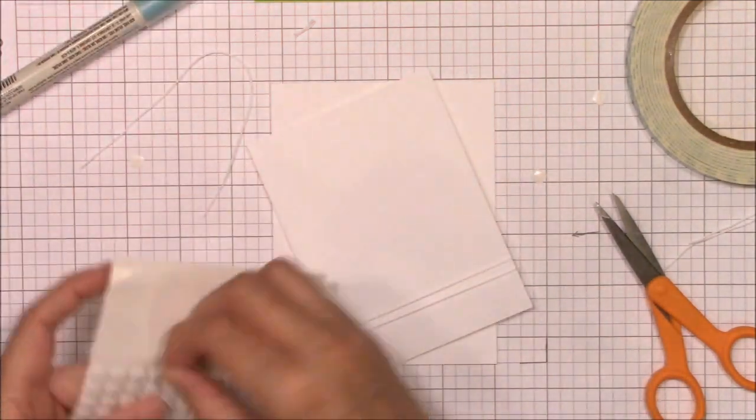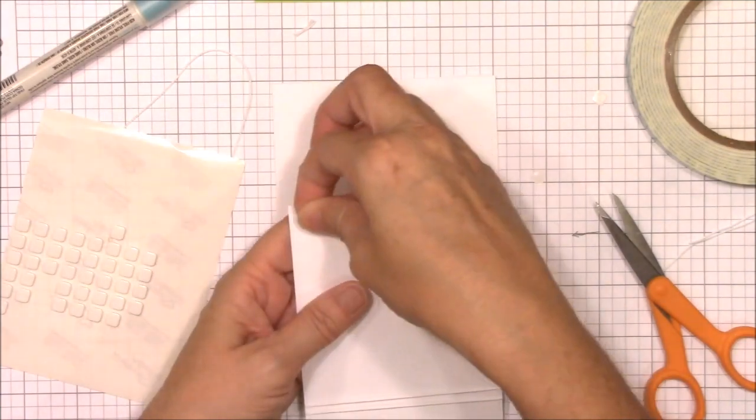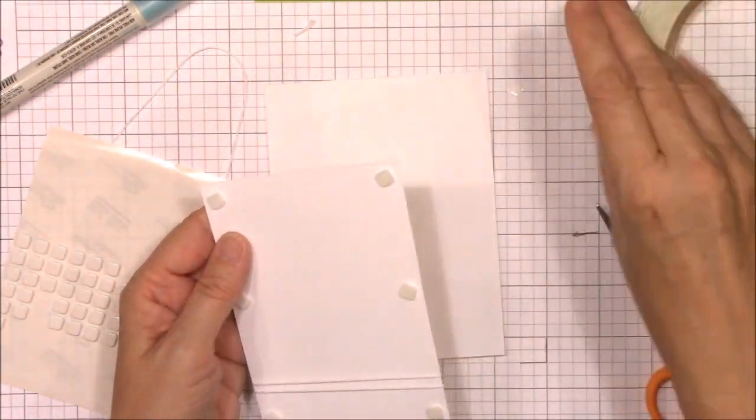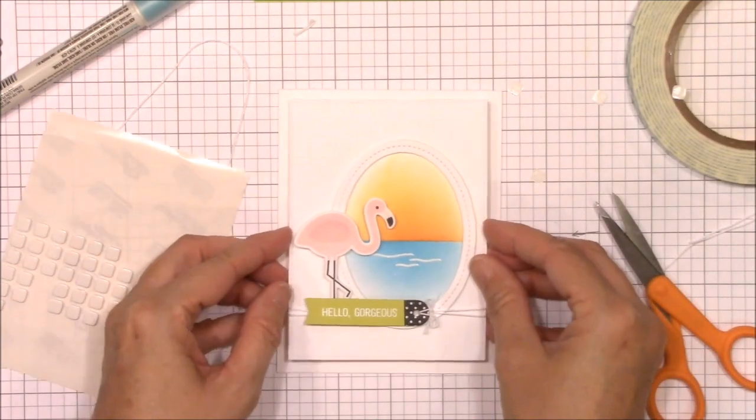I'm adding more foam squares to the back of the image panel and I'm adhering it to the 4.25 inch by 11 inch smooth white card base that I scored and folded in half off camera.